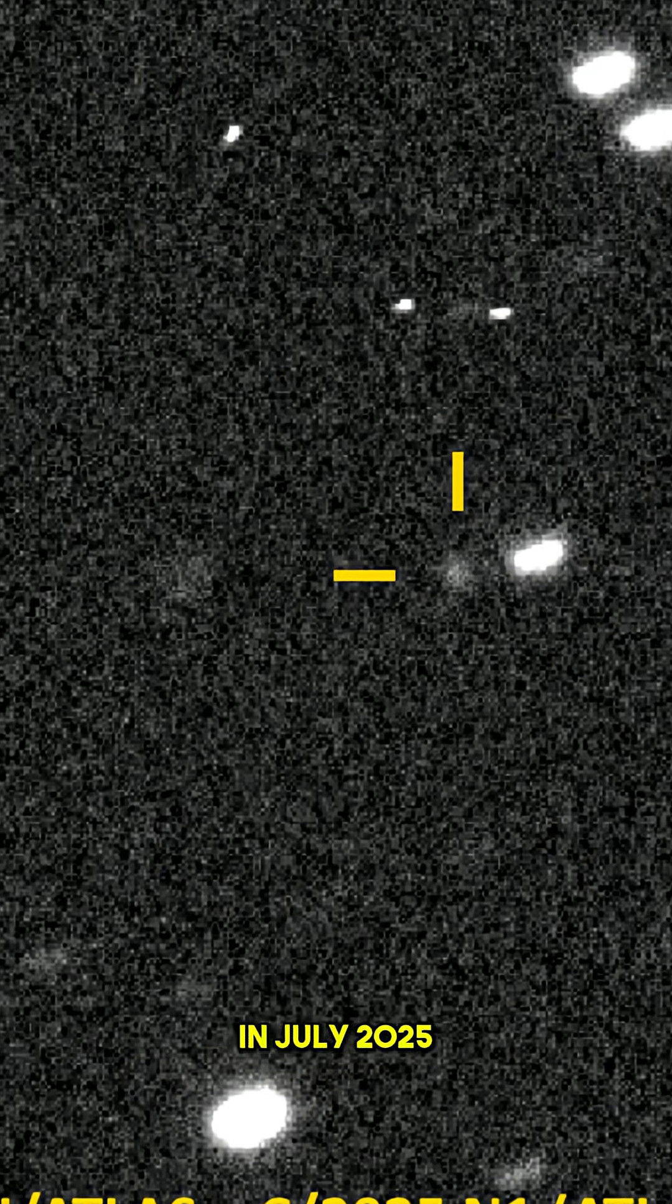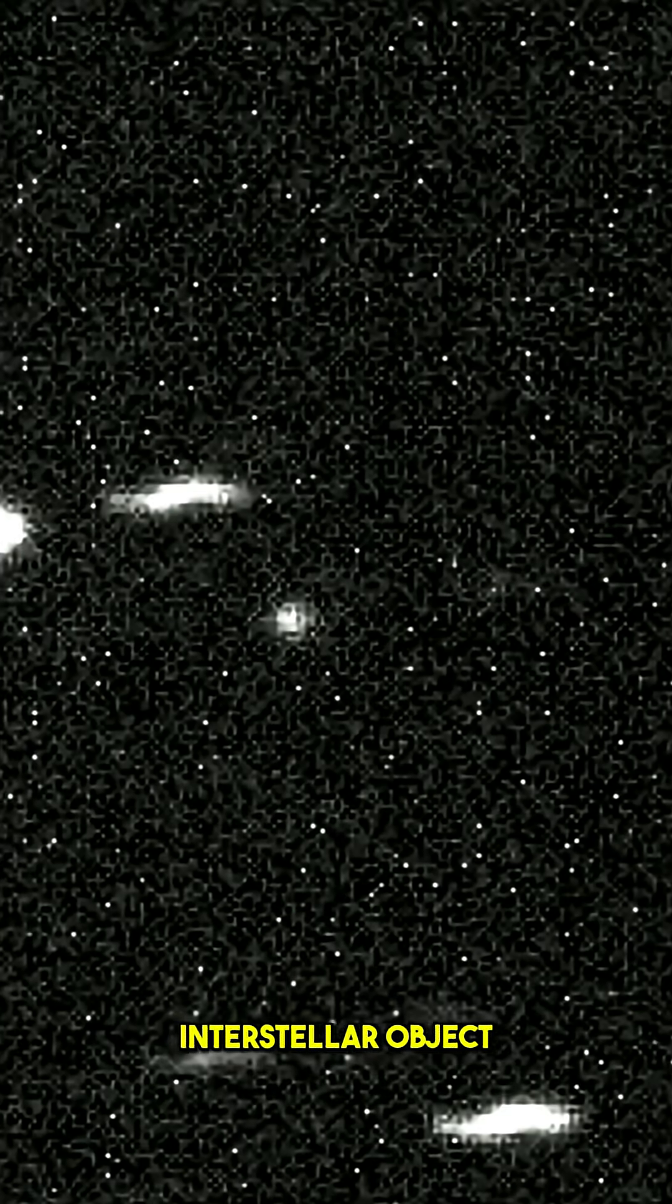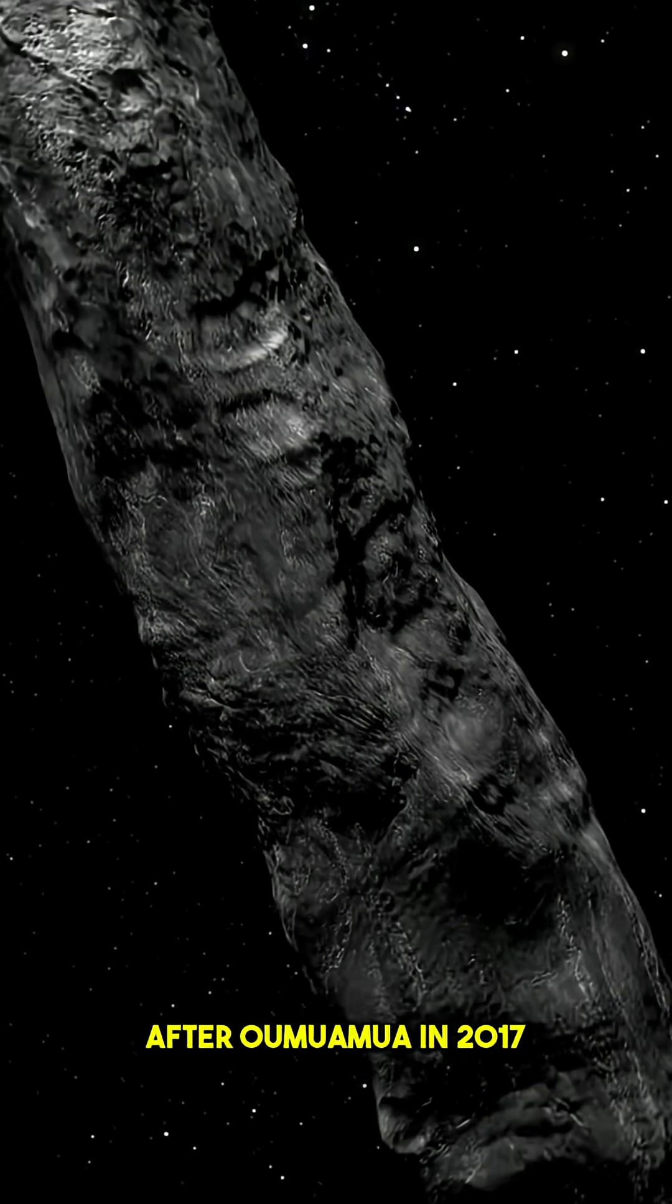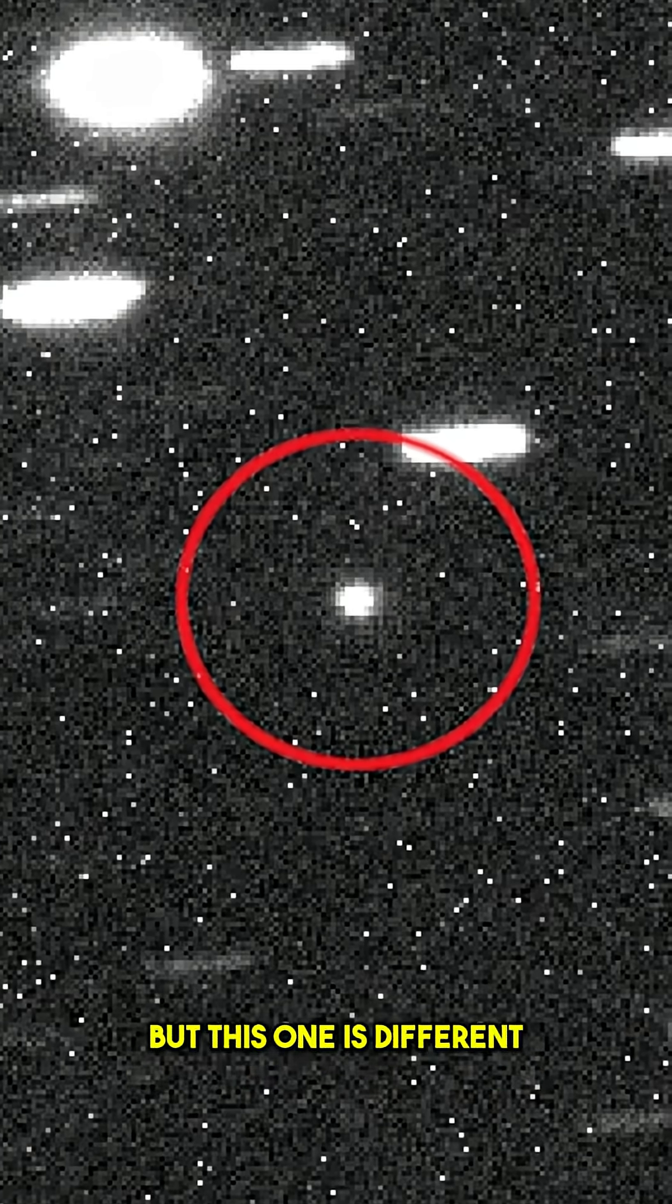Did you know our solar system just got another visitor from the stars? In July 2025, astronomers discovered 3I Atlas, the third-ever interstellar object to pass through our cosmic neighborhood after Oumuamua in 2017 and Borisov in 2019. But this one is different.